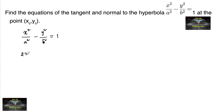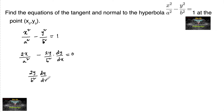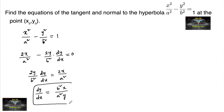We'll have 2x / a² minus 2y / b² × dy/dx = 0, or we can write 2y / b² × dy/dx = 2x / a², or we can write dy/dx equal to b²x / a²y.